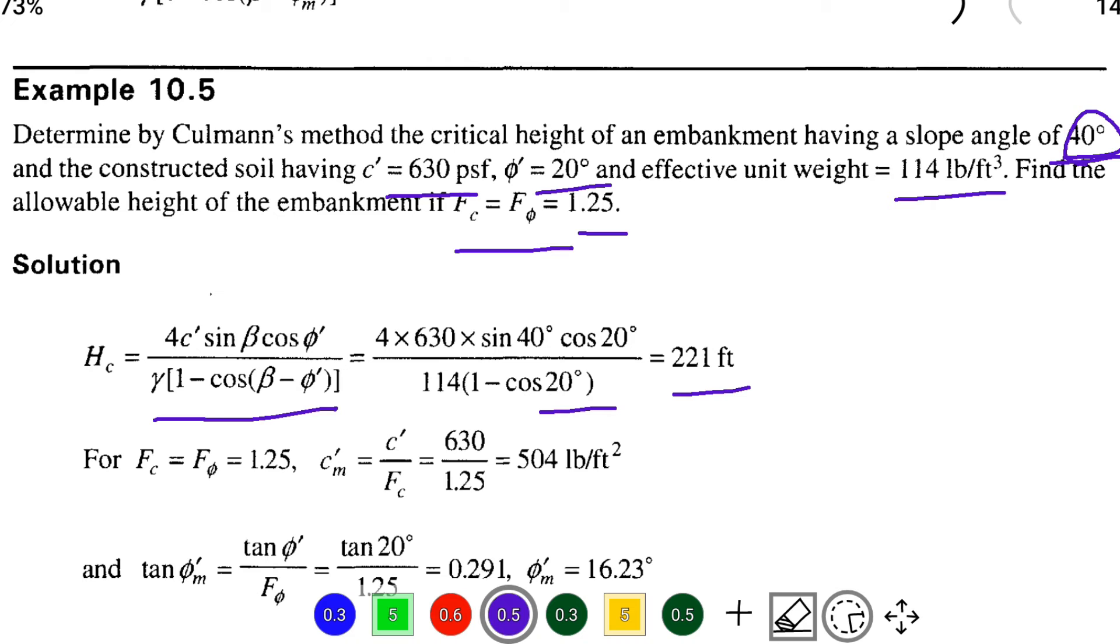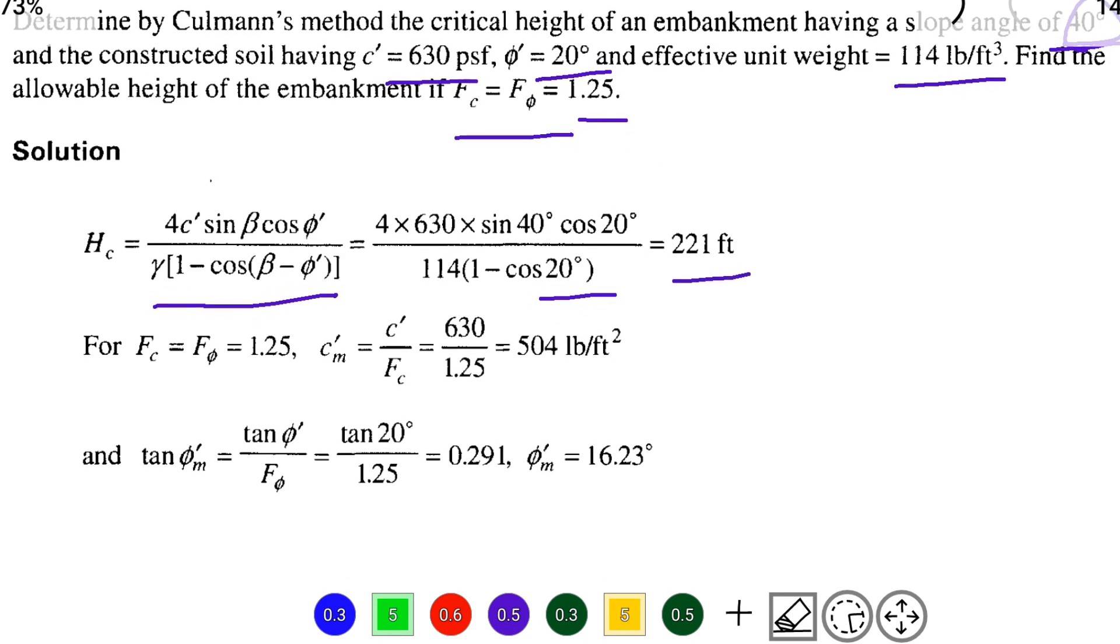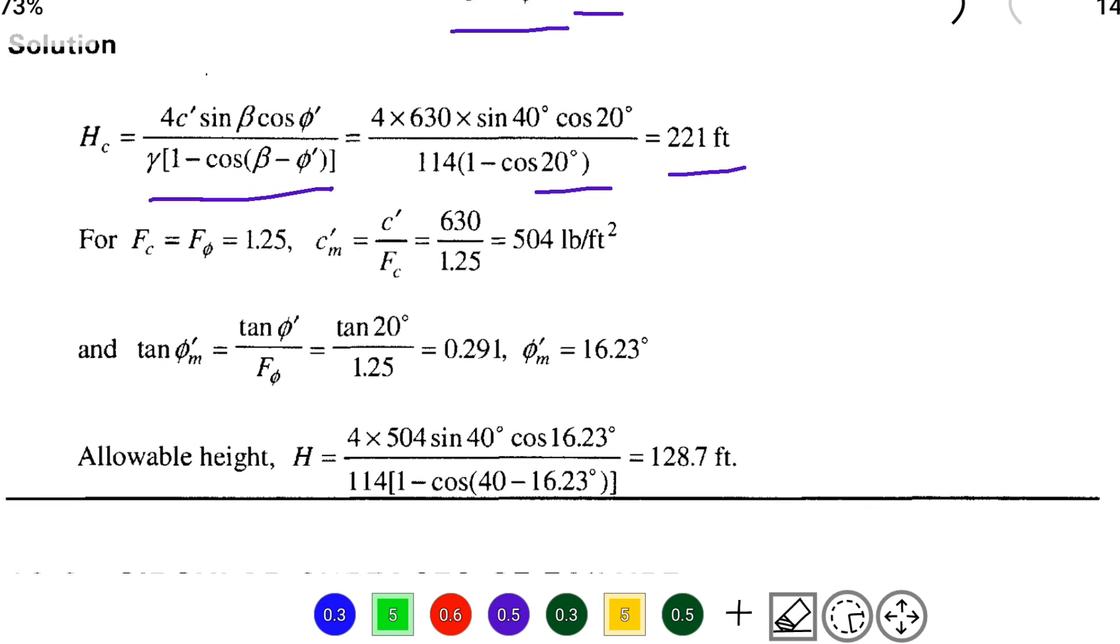From that we have to find out the mobilized cohesion as well as mobilized φ. Using those things we can find out the allowable height.